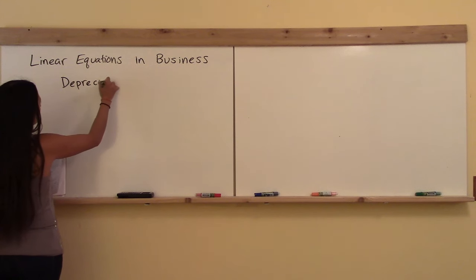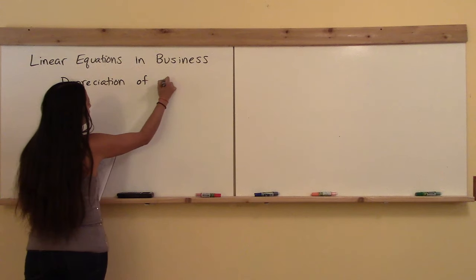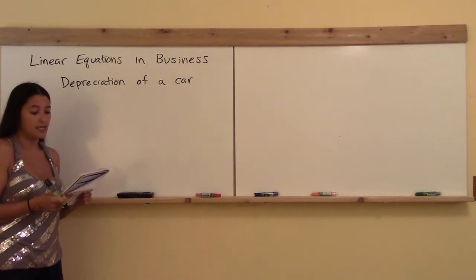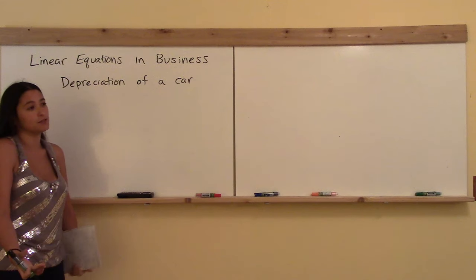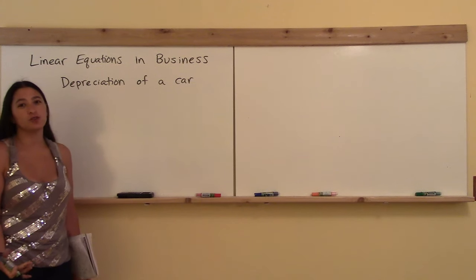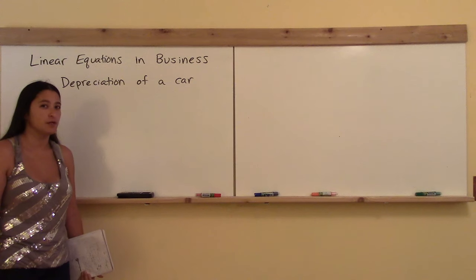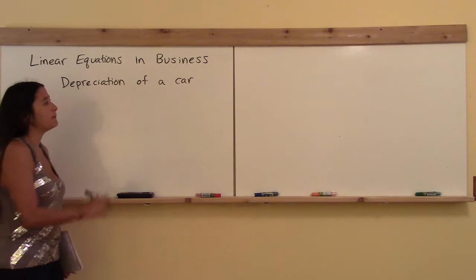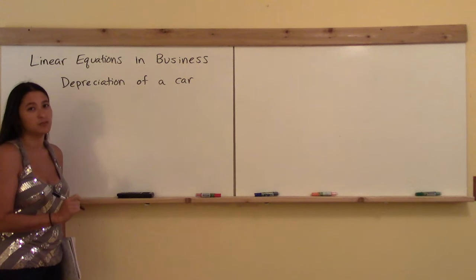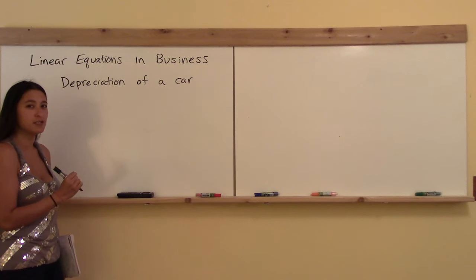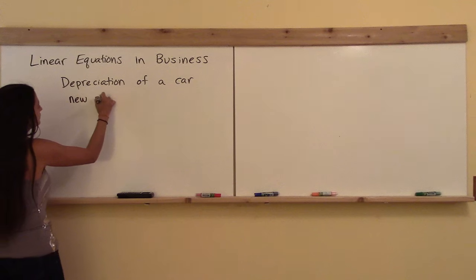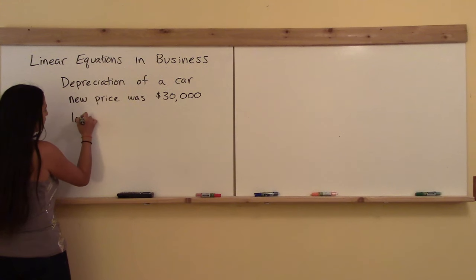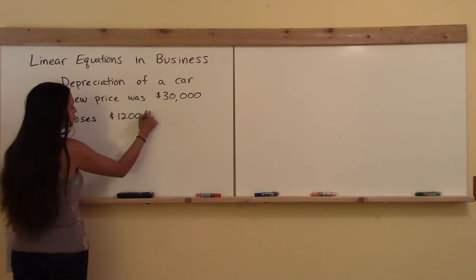My first example is going to be the depreciation of goods — in this case, a car. Let's say I bought a brand new car. It cost me $30,000, and every year it depreciates by $1,200. This is going to be the simplest type of model we can make: it loses the same amount every time period. The new price was $30,000, and we'll assume it loses $1,200 per year.